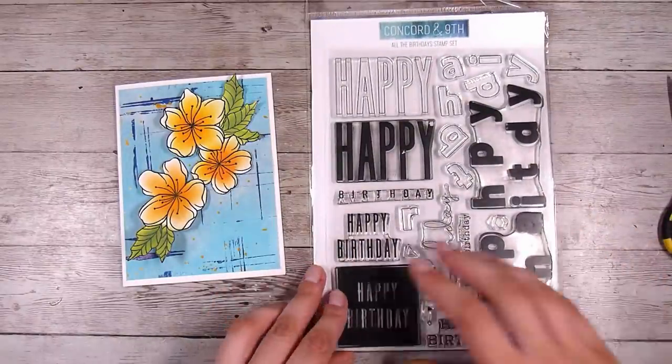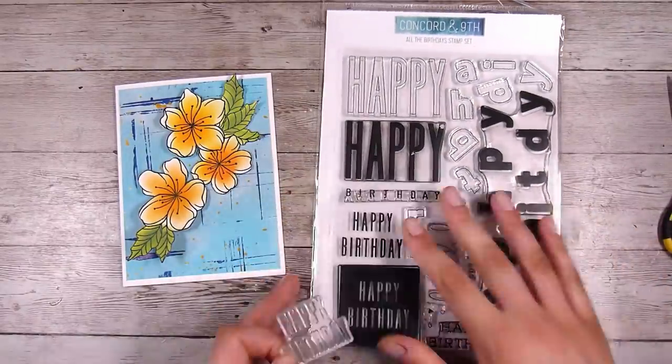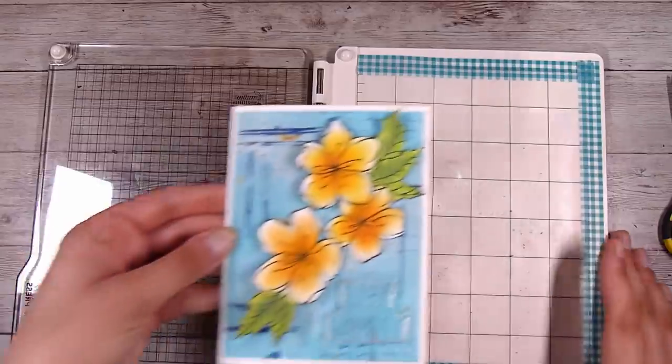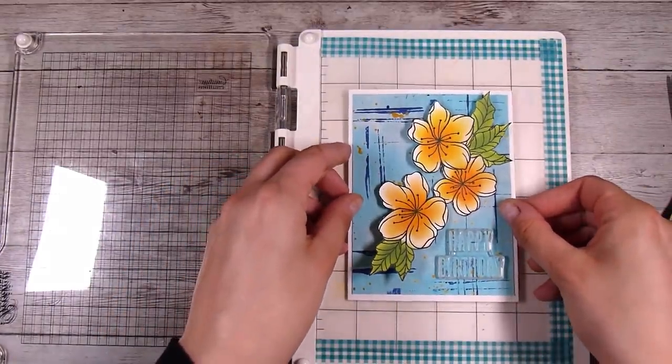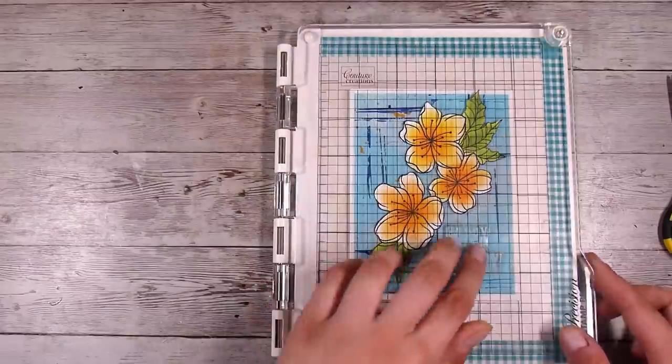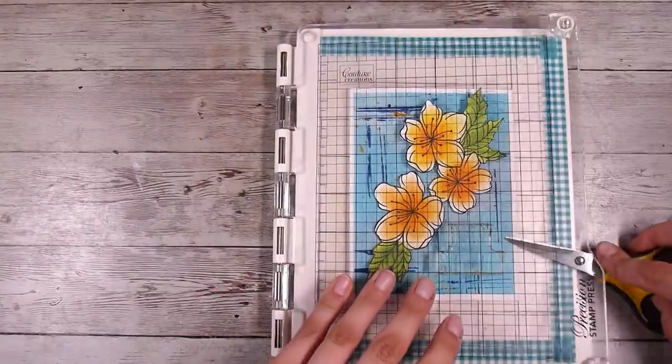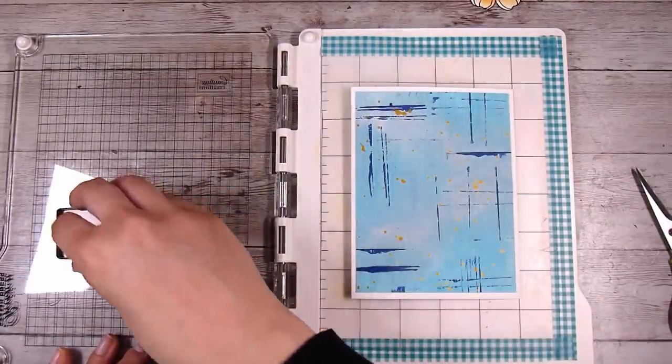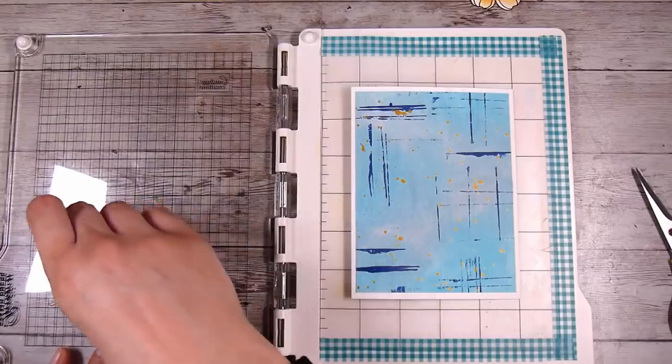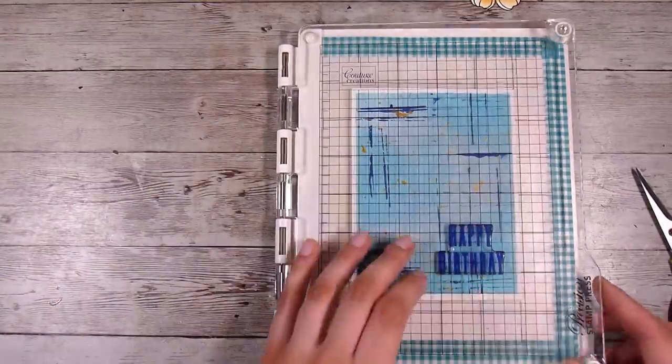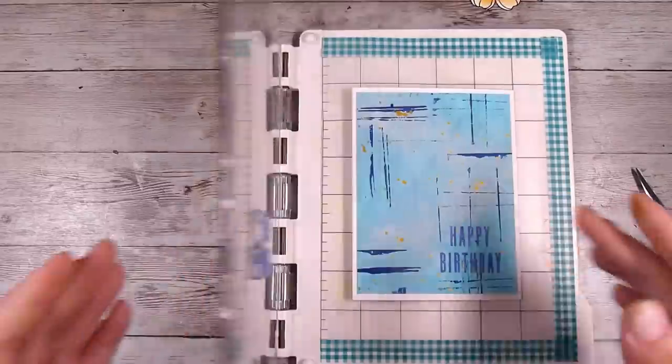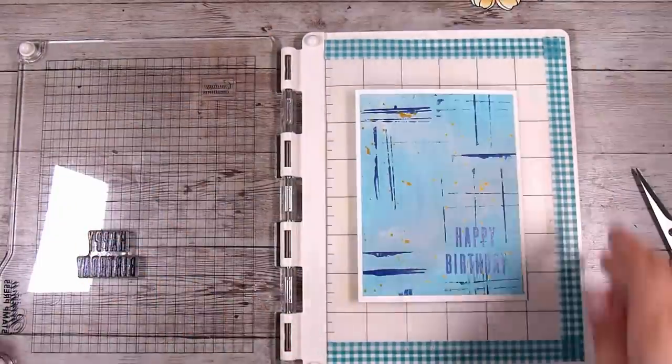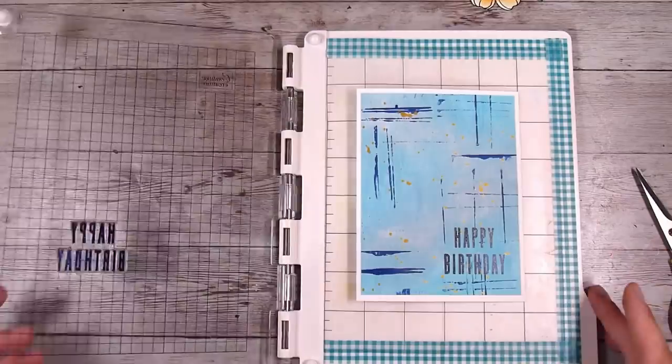Then I am going to use the All the Birthday stamp set. This is my favorite. It has so many different birthday sentiment options and this is my go-to, well and truly at the moment. Another great thing about this acrylic paint is that I can stamp directly onto it. I am going to use some, this is a Versafine little square ink pad and I can't even remember the color. I think it's majestic blue.